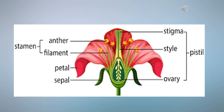The role of petals is to protect the bud before it blossoms into a flower. The style connects the stigma to the ovary. The female part of the plant is called the pistil. The stigma lies at the top of the pistil, and the tube that connects it is called the style. The anther is covered in pollen.